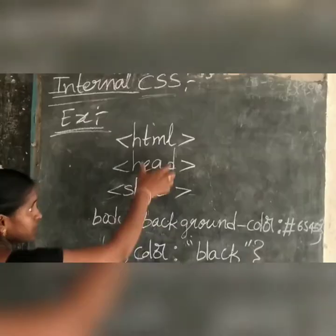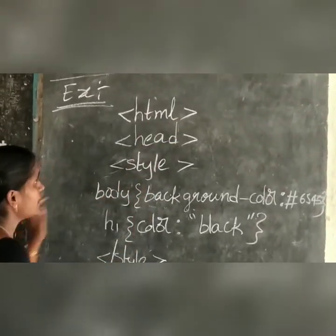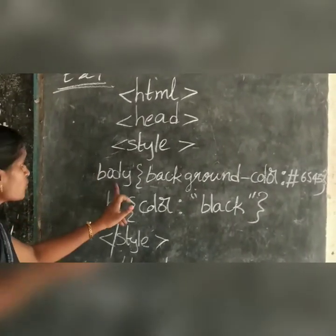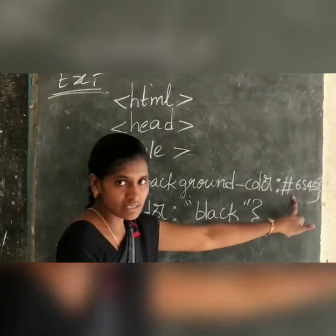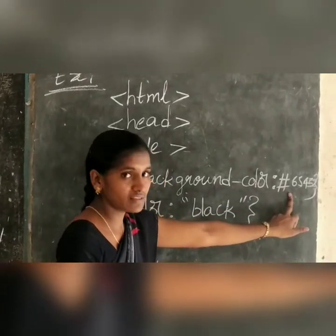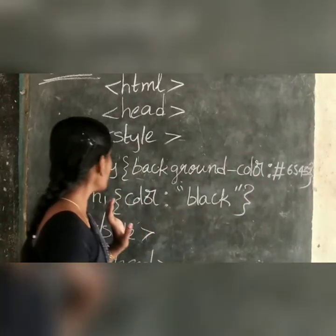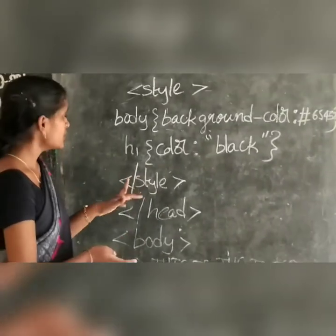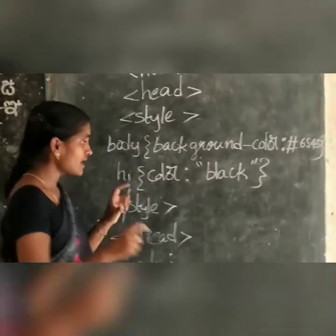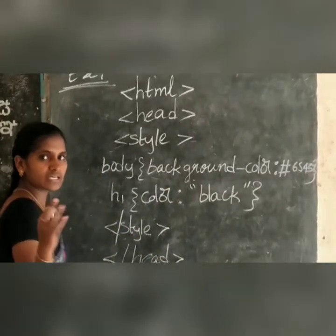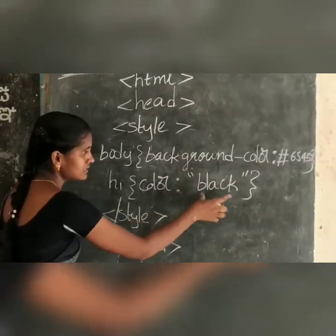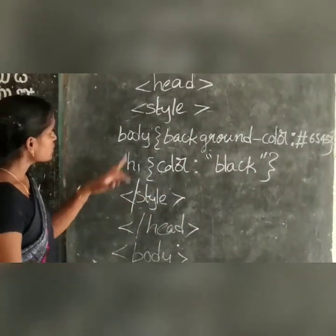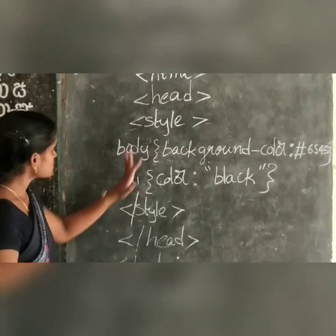In this example, first we take the HTML tag, then give the head tag, and then the style tag. Inside the style tag, we take the body and set the background color using a hexadecimal color code. Then for H1, which is the heading tag, we give the color as black or any color we wish — that color will appear on the web page.